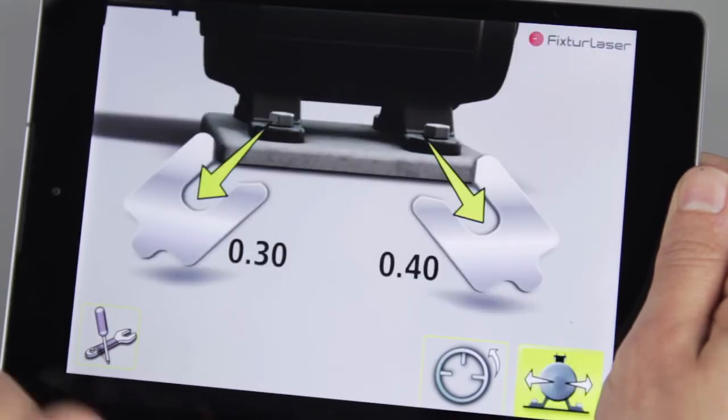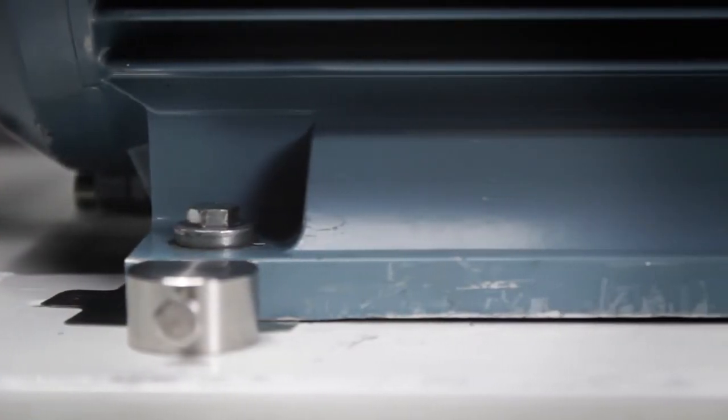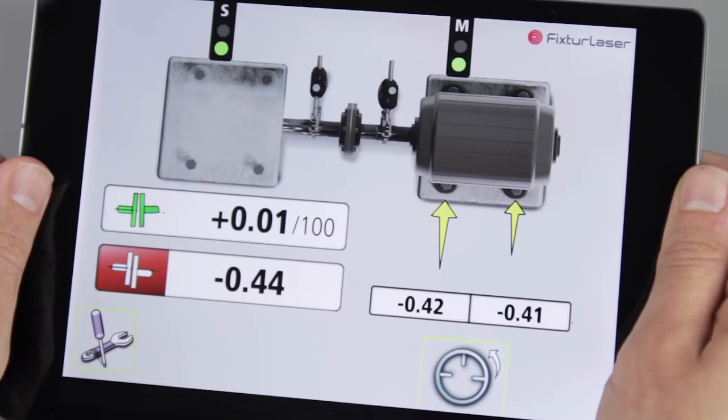Of course, Fixture Laser's unique feature, Vertizontal Moves, gives exact instructions on how to align, saving both time and energy, is included in the Fixture Laser Laser Kit.